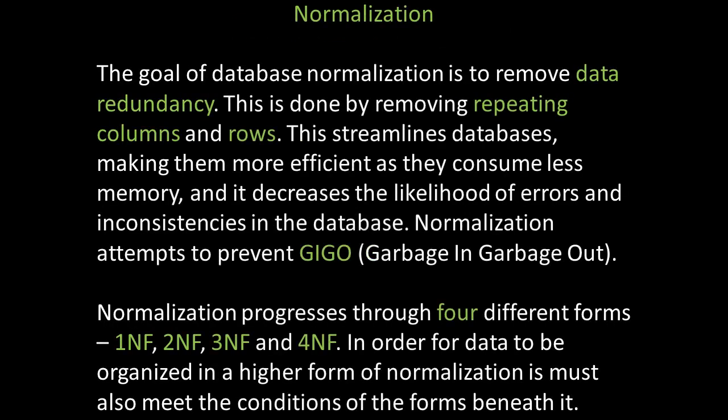Good database design incorporates normalization. The goal of database normalization is to remove data redundancy by removing repeating columns and rows of repeating fields. This streamlines databases, making them more efficient as they consume less memory, and decreases the likelihood of errors and inconsistencies. Normalization attempts to prevent GIGO — garbage in, garbage out. Normalization progresses through four different forms: 1NF or first normal form, 2NF or second normal form, 3NF or third normal form, and sometimes 4NF or fourth normal form. Data must meet the conditions of lower forms before achieving a higher form of normalization.